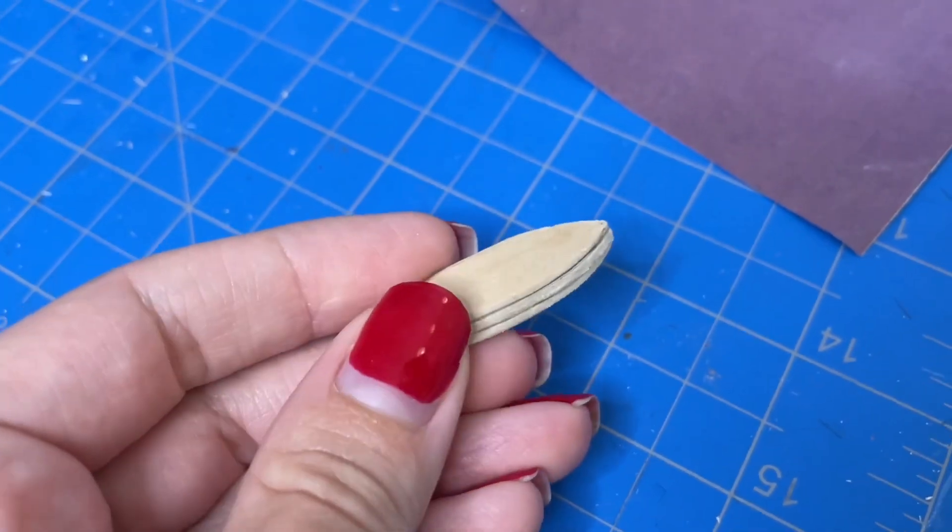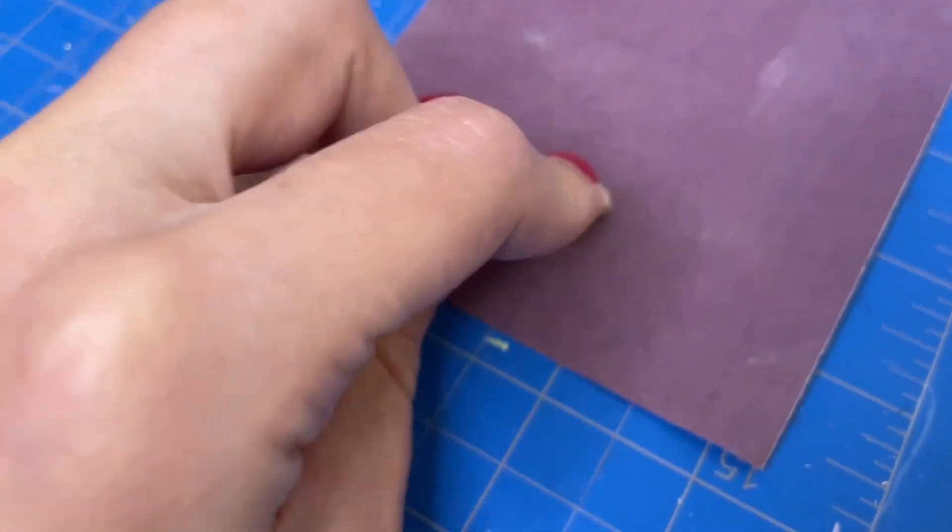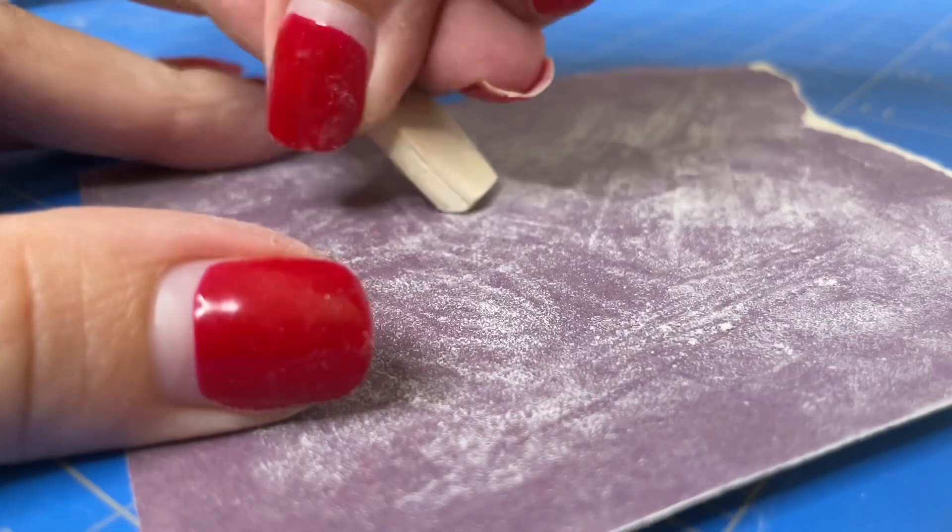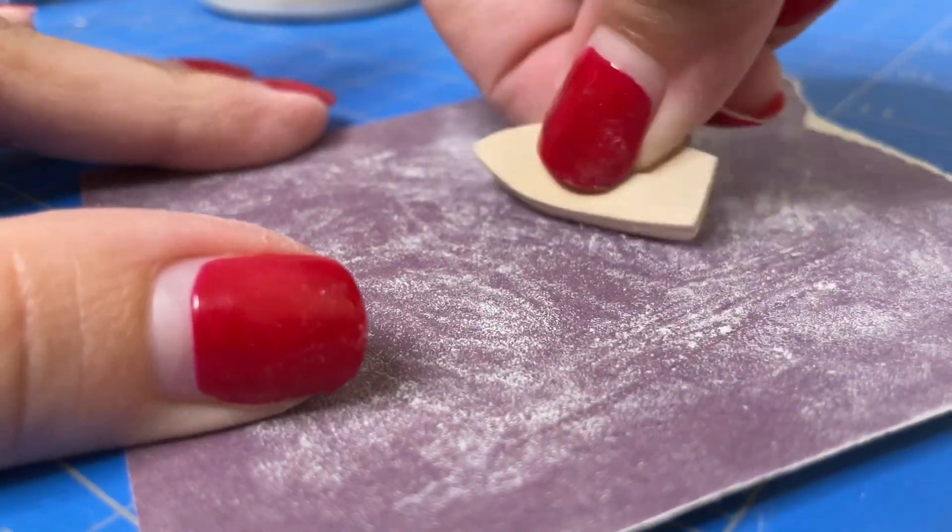And now that these are all dry I'm going to use some sandpaper to sand down the edges to get them all even and make it look like it's going to be one piece of wood. I'm also sanding down the edges and making them more round and look more like a boat.